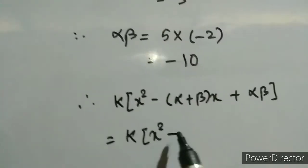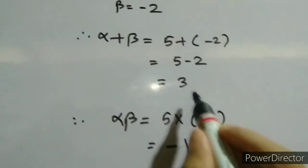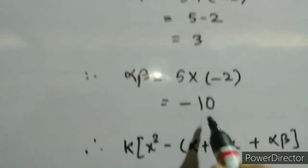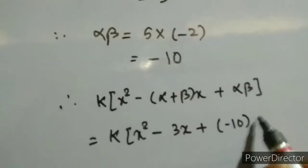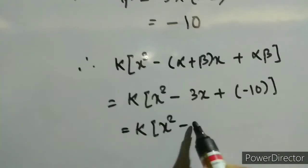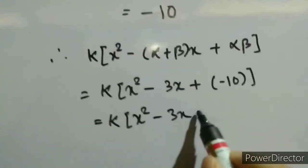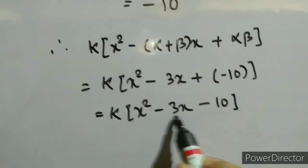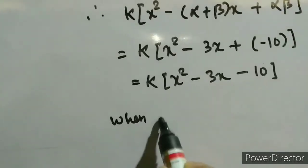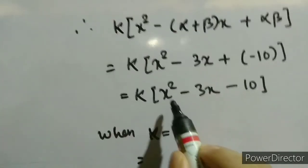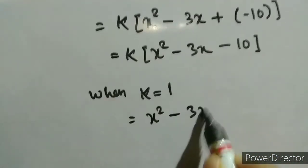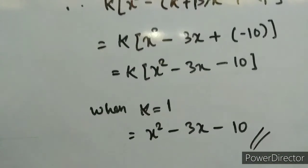Our alpha plus beta is 3, so we put 3x. Alpha times beta is minus 10, so we put minus 10. This gives k times (x squared minus 3x minus 10). Here there is no fraction, so the denominator is 1, and k equals 1. Multiplying by 1 leaves everything the same. Therefore the quadratic polynomial is x squared minus 3x minus 10.